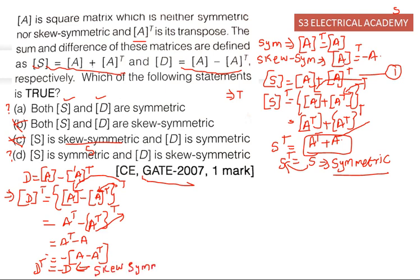Therefore, option D is correct: S is symmetric and D is skew-symmetric.